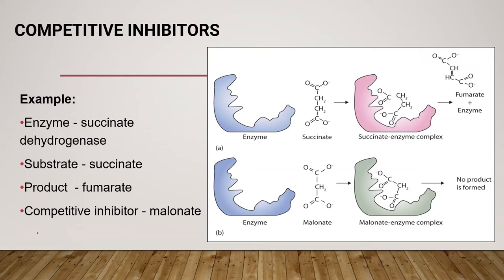An example given here is malonate. Malonate is a three-carbon dicarboxylic acid. It is well known as a competitive inhibitor of succinate dehydrogenase. As you can see, it has a similar shape to the natural substrate, which is succinate. Normally, succinate binds to the active site of the enzyme to form a succinate-enzyme complex, and the product fumarate is produced. However, if malonate binds to the active site, it forms a malonate-enzyme complex and no product is formed.